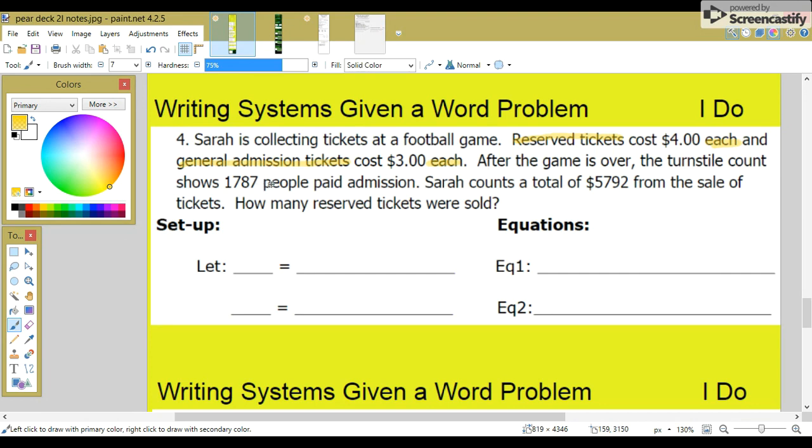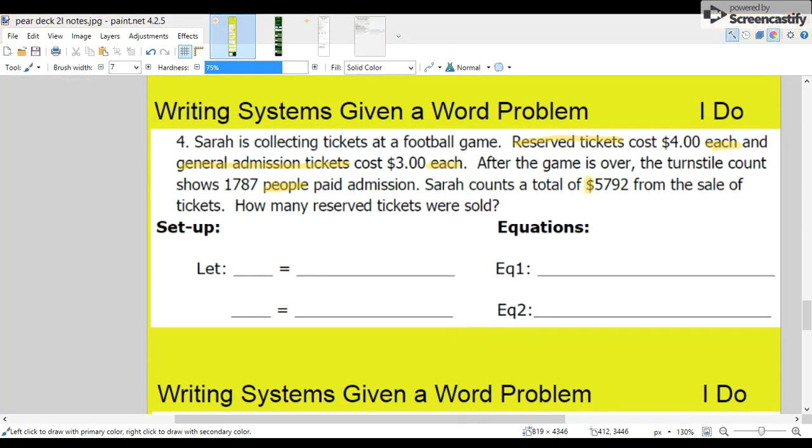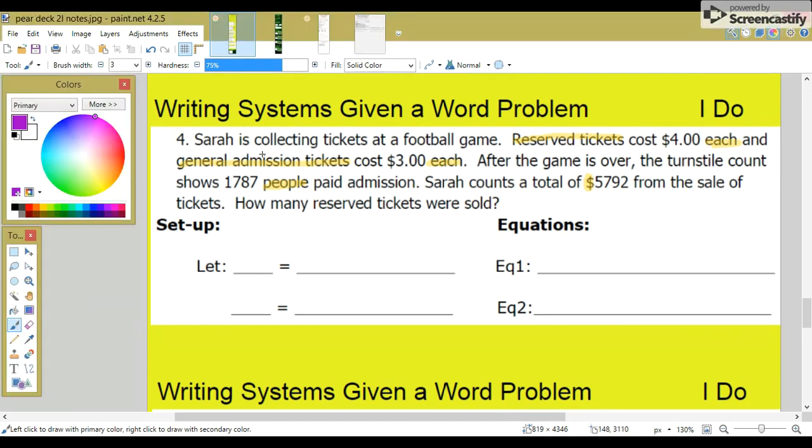There was 1,787 people. And the total money was $5,792. Now let's box the key numbers. We have four dollars each for reserve tickets. And then for the general admission, that was three dollars. We have 1,787 people. And a total cost of $5,792.